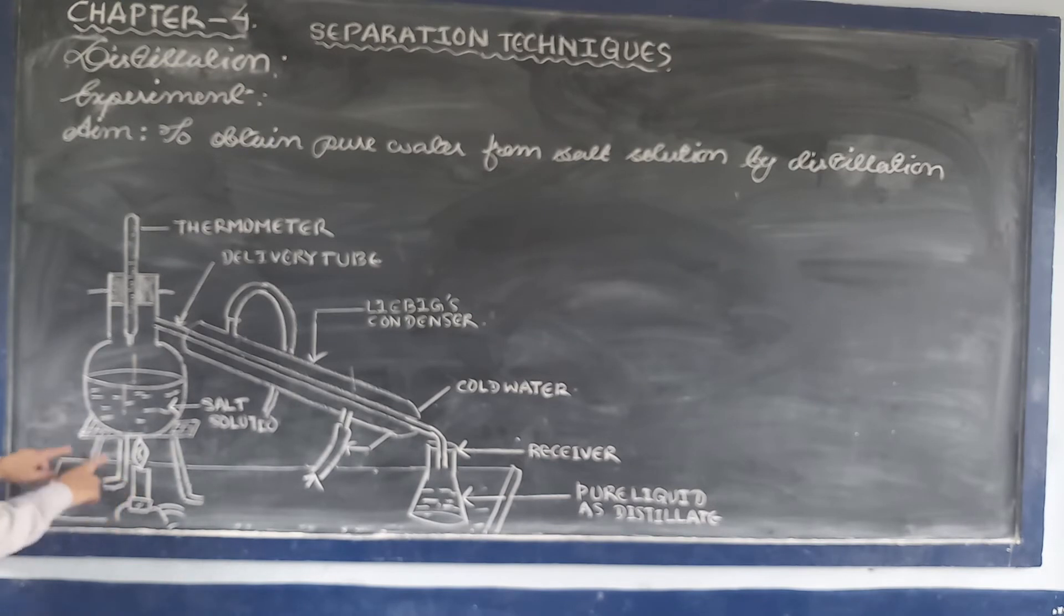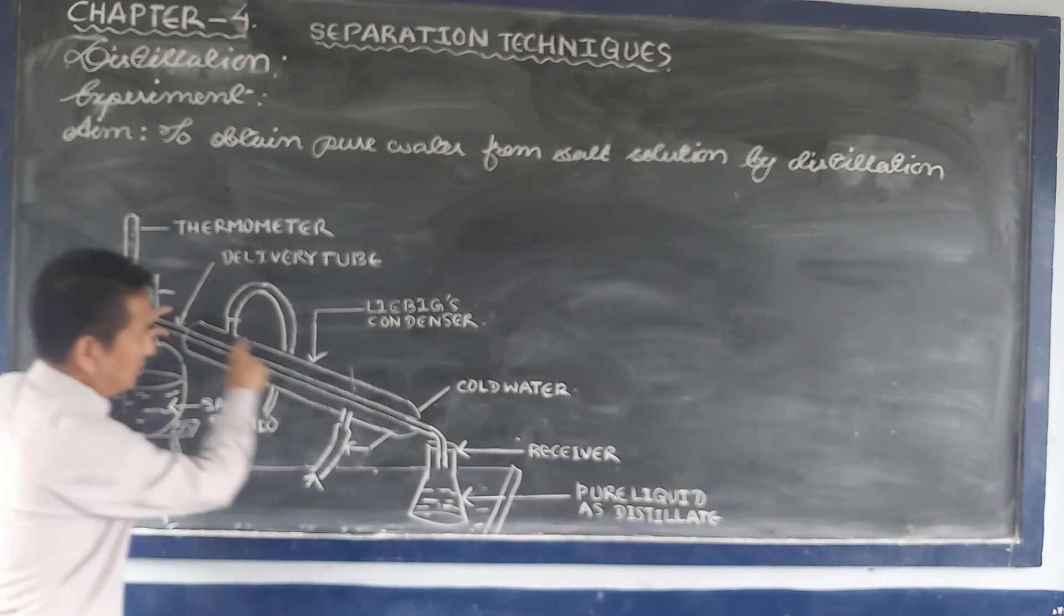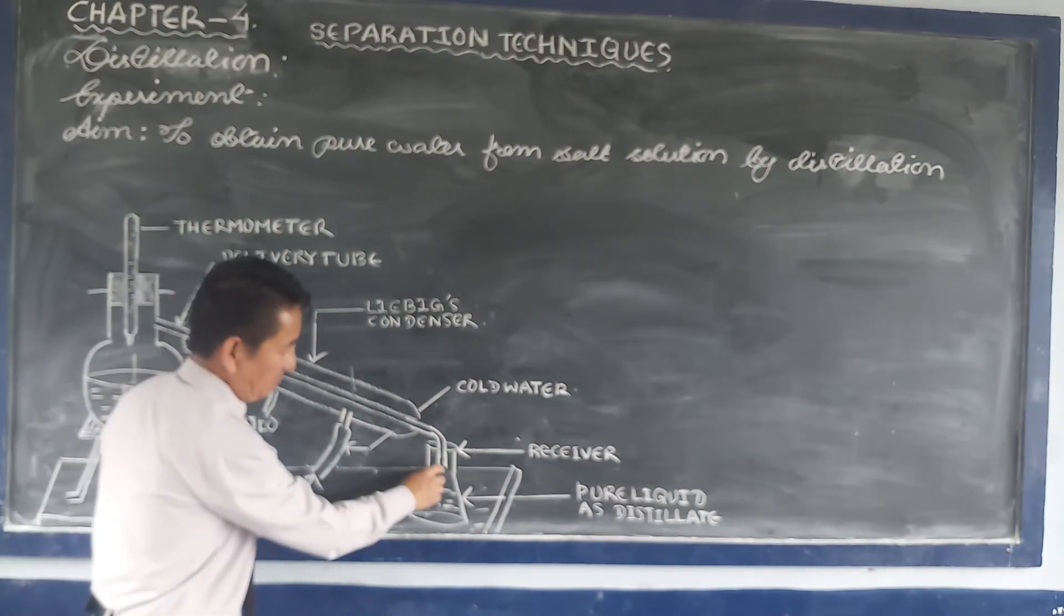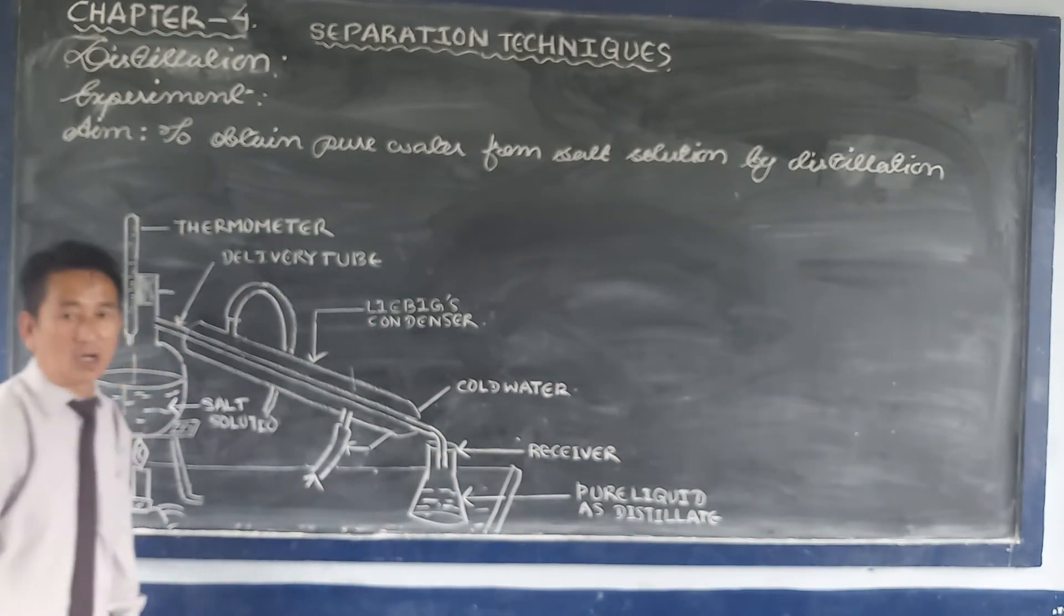Tripod stand, Bunsen burner, wire gauze, distillation flask, cork, thermometer. The spout or opening of the distillation flask is fitted with a condenser. The free end of this delivery tube is connected to a receiver.